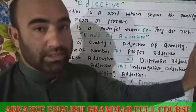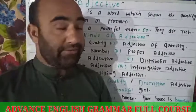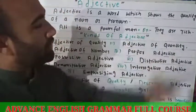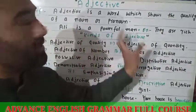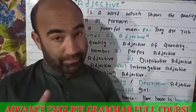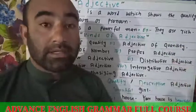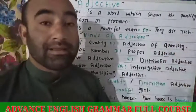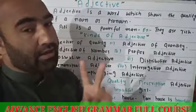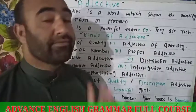Now we have to keep in mind the position of adjective — where we can place it correctly. There are two positions of adjective. First, it comes before a noun, as in 'Ali is a powerful man.' Second, it comes after the main verb, as in 'They are rich.' We cannot place adjective somewhere else; only these two positions are there for adjective.